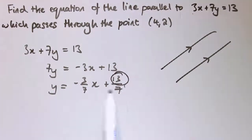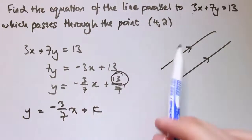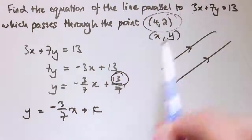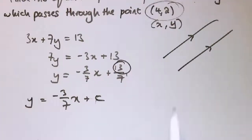I know it goes through the point (4,2), so that's x equals 4, y equals 2, so I plug in: 2 equals minus 3/7 times 4 plus c.